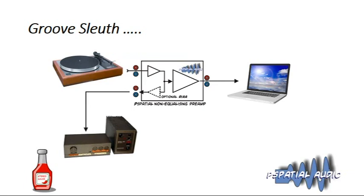There are two loop options: a conventional RIAA loop at line level to feed your preamp, or a very wide bandwidth, very low distortion loop called iLoop — Intelligent Loop — because it detects what kind of phono input it's being sent to. If sent to a moving magnet input it adjusts its level automatically, and if sent to a moving coil input it does the same. So you can listen to your records with very low distortion, just as you always have.